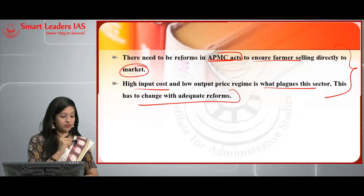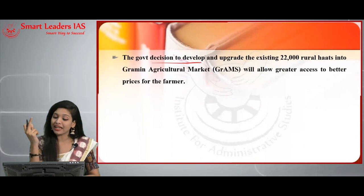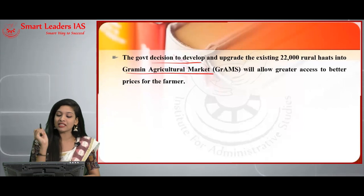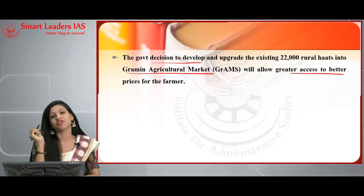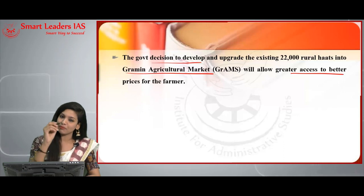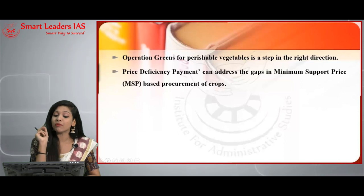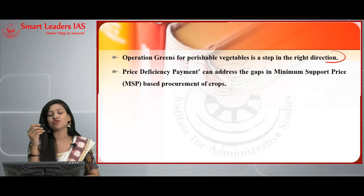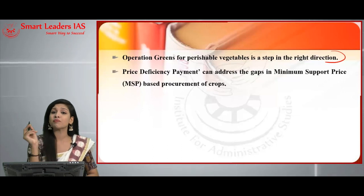Another important point is the government's decision to develop and upgrade the existing 22,000 rural haats into the Gramin Agriculture Market (GrAMs), which will allow greater access to better prices for farmers. The next point is 'Operation Greens' with respect to perishable vegetables — that is also a step in the right direction for hiking MSP benefits.